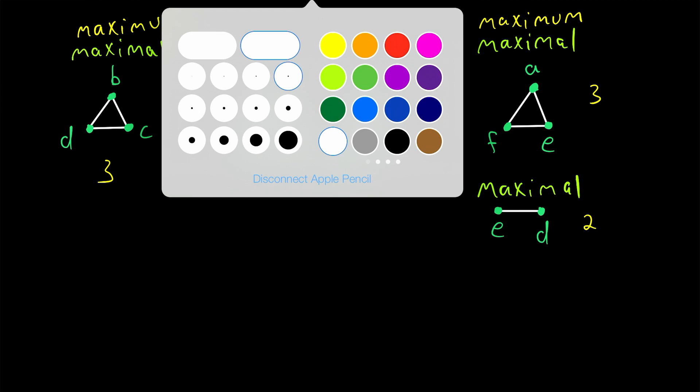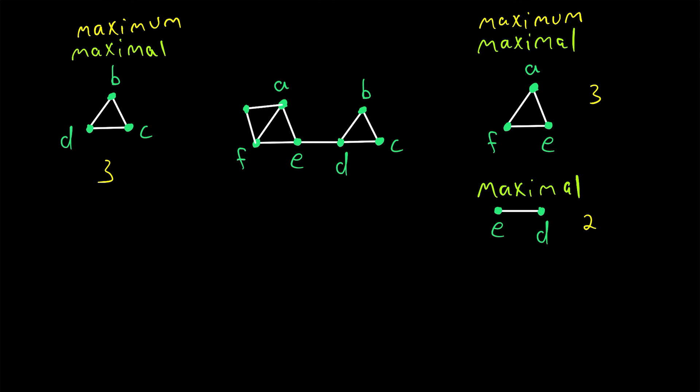And just one last thing to develop this example a little more, let's just slightly change the graph. Adding in this new vertex that we will call G, along with a few new edges. After making this change, a few more cliques have been created, like this clique with three vertices containing G, F, and A.